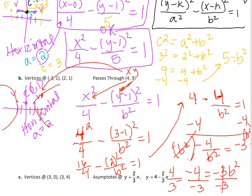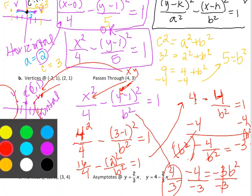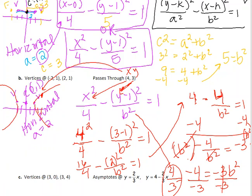So, b squared is positive 4 over positive 3. And so, all you have to do is take that 4 over 3 and plug it directly right back in here. And so, my final answer is x squared over 4 minus y minus 1 quantity squared over 4 thirds equals 1. And you can just leave it like that at your answer.